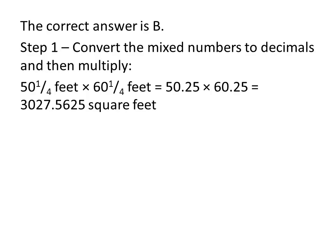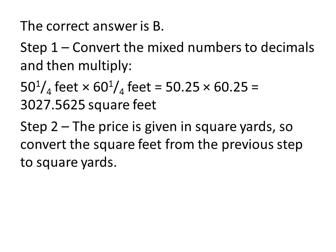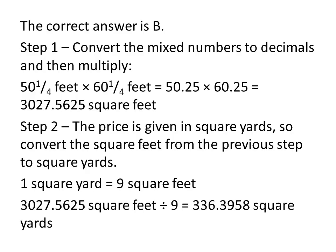Moving on to the second step, the price is given in square yards, so we need to convert the square feet from our previous step to square yards. We know that 1 square yard is equal to 9 square feet, so 3,027.5625 square feet divided by 9 square feet per square yard gives us 336.3958 square yards for the size of the lawn.